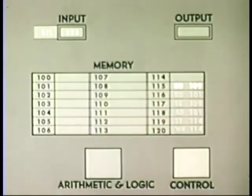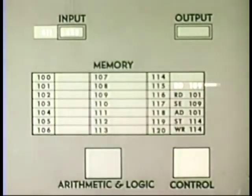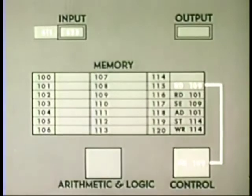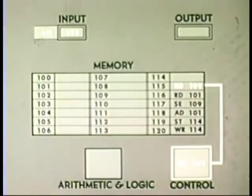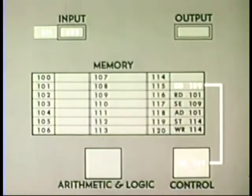From memory, the instructions move automatically and in sequence into the control section. The control section interprets the instruction and sets up the proper electronic circuits to execute the instruction read 109.